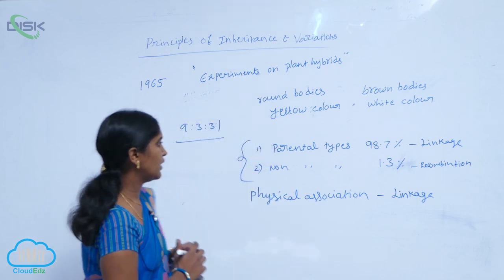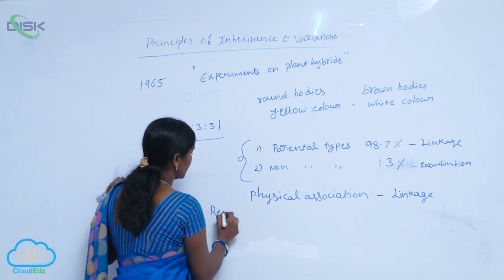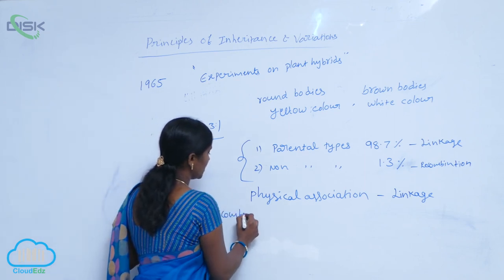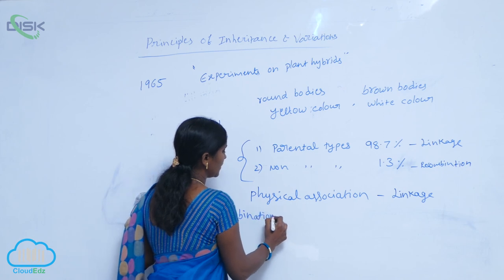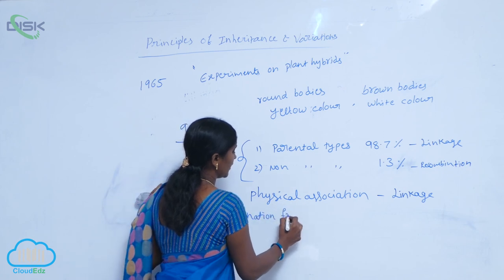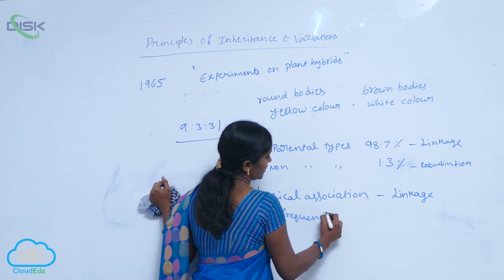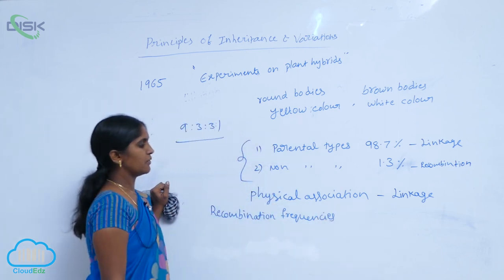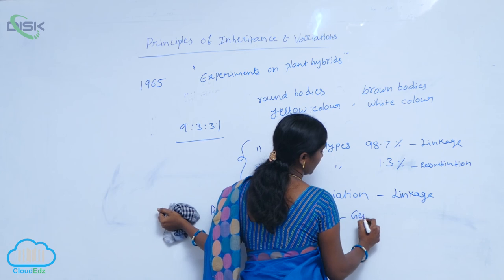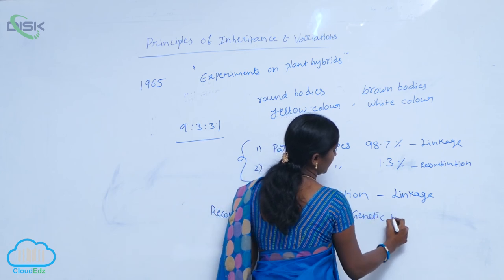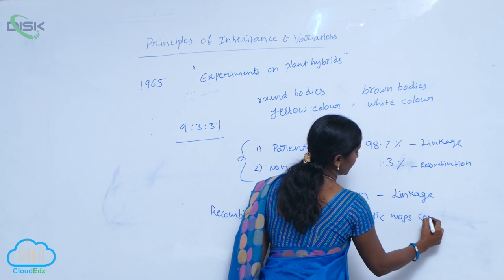Using recombination frequencies, genetic maps are constructed. Recombination frequencies are used to determine the relative positions of genes on chromosomes, and from these frequencies, genetic maps are constructed.